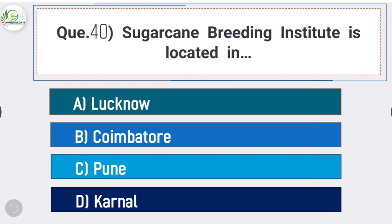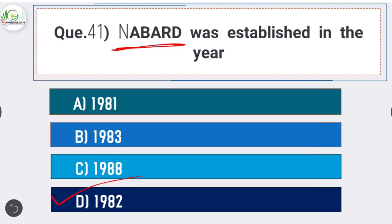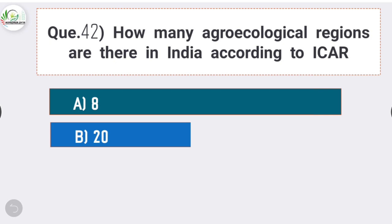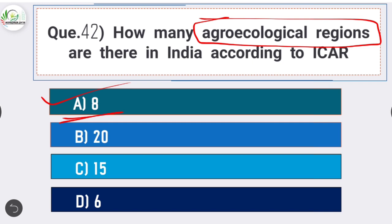Question number forty: Sugar Cane Breeding Institute is located in Coimbatore. Question number forty-one: NAFED was established in the year - answer is option D - 1982. Question number forty-two: how many agro-ecological regions are there in India according to ICAR? Answer is option A - 8. According to ICAR there are 8 agro-ecological regions in India.